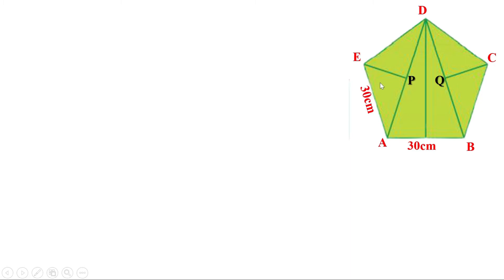Now, we know these two triangles are equal. Therefore, these two angles are also equal, so each of them is equal to 54 degrees. That means this angle is 54 degrees. Now, look at triangle A, P, E — this angle is 54 degrees.